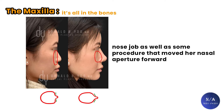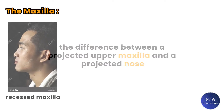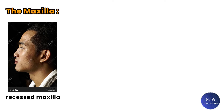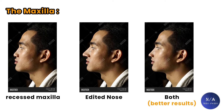We will quickly go over the differences between a projected upper maxilla and a projected nose. This is a guy with a recessed maxilla — giving him a forward protruding Caucasoid nose doesn't result in a good look. His nasal aperture and the nose around it needs to get pulled forward, like this, which gives better results.